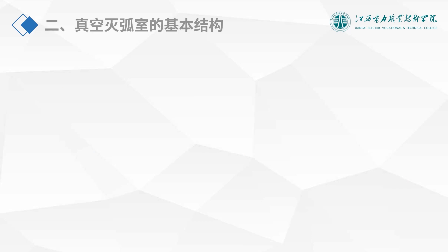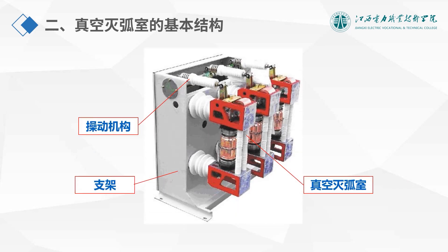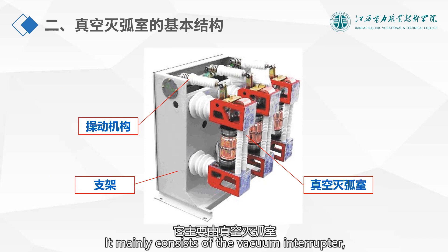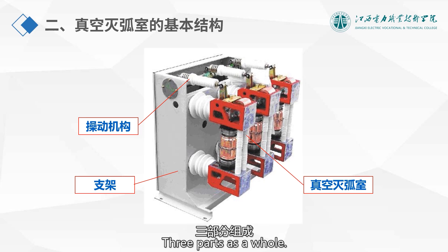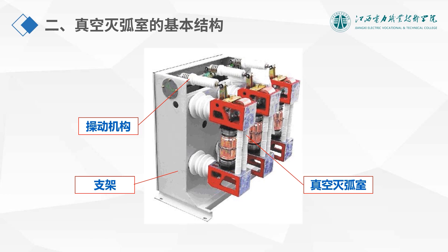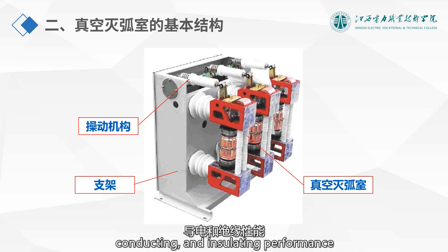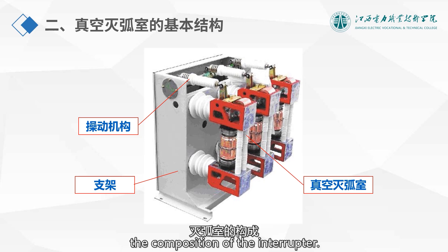Next, let's look at the basic structure of the vacuum circuit breaker. It mainly consists of three parts: the vacuum interrupter, the support frame, and the operating mechanism. The vacuum interrupter is the core of the entire device — it determines the braking, conducting, and insulating performance of the circuit breaker.